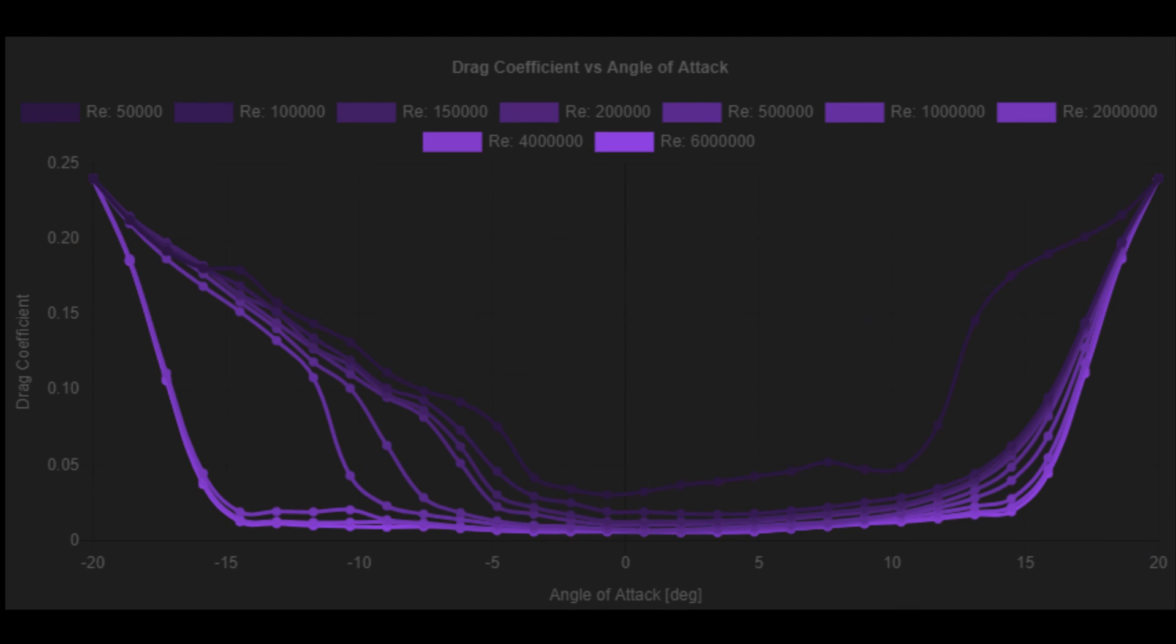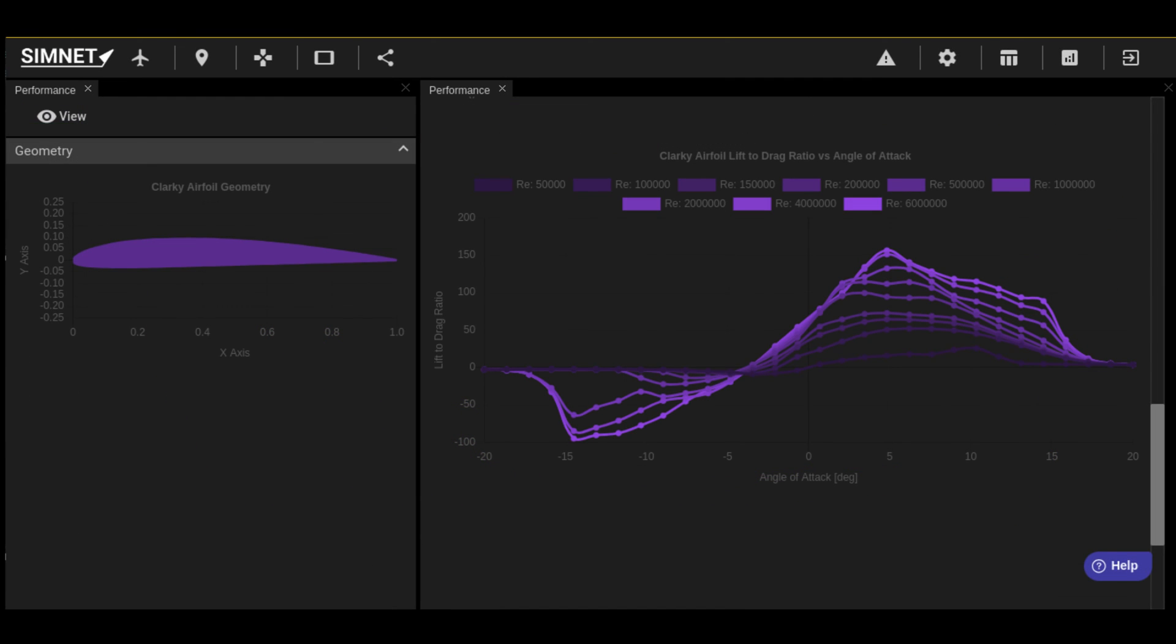This is a plot of an airfoil's drag coefficient versus angle of attack and Reynolds number. The drag coefficient of the airfoil is generally reduced with higher Reynolds numbers, because of the reduction in form drag. The increase in lift and reduction in drag results in a higher aerodynamic efficiency at higher Reynolds numbers, as shown in this lift to drag plot.